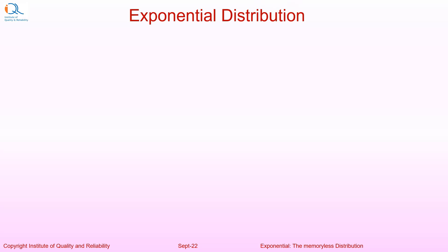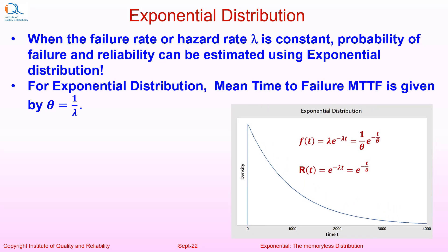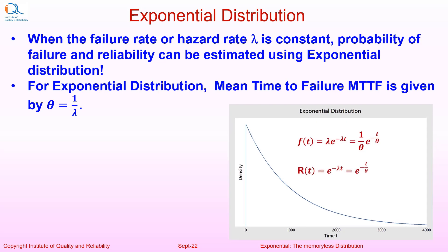The Exponential Distribution. When failure rate or hazard rate lambda is constant, probability of failure and reliability can be estimated using exponential distribution. For Exponential Distribution, mean time to failure MTTF is given by reciprocal of the failure rate, and therefore theta equals 1 upon lambda.